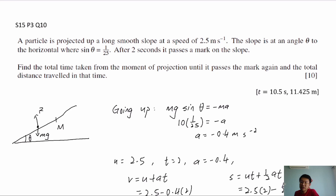Question 4 is a 10-mark question with quite a bit of work. A particle is projected up a long smooth slope with a speed of 2.5 m/s. The slope is at angle θ where sin θ = 1/25. After 2 seconds it passes a mark on the slope. Find the total time from projection until it passes the mark again, and the total distance traveled.